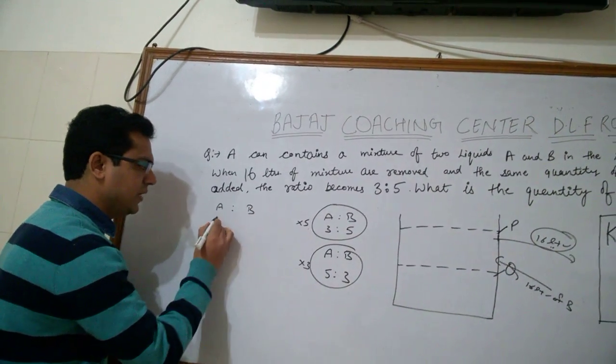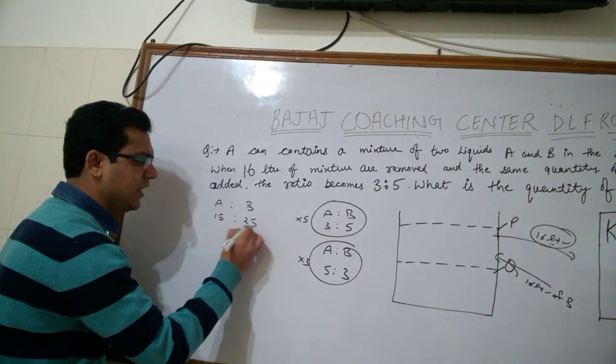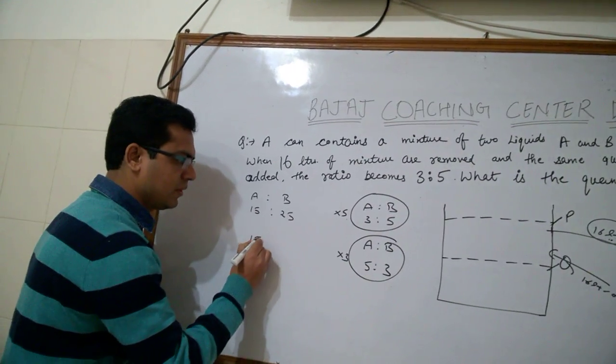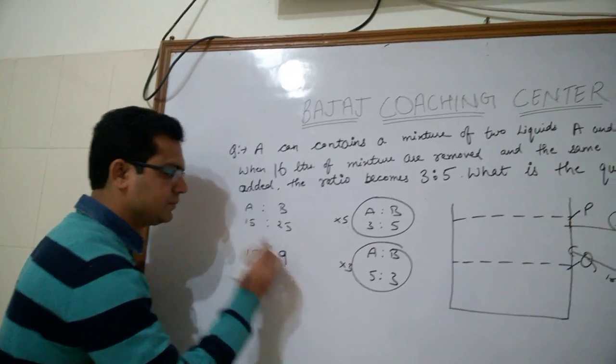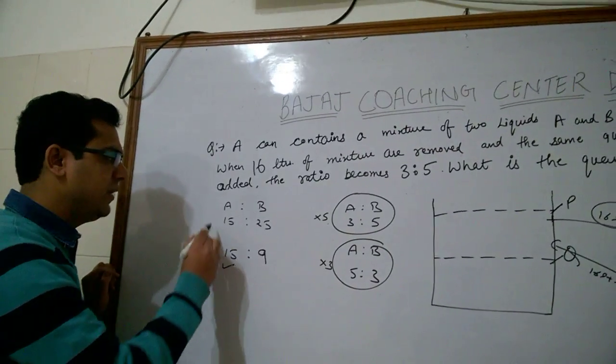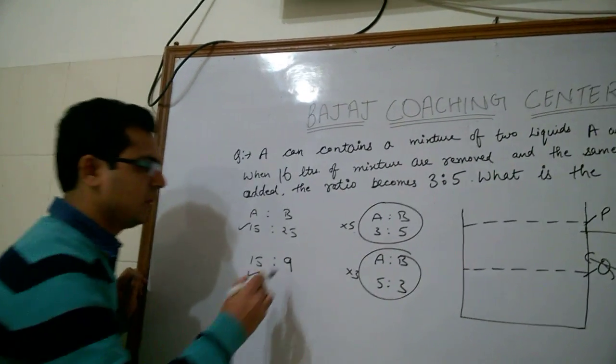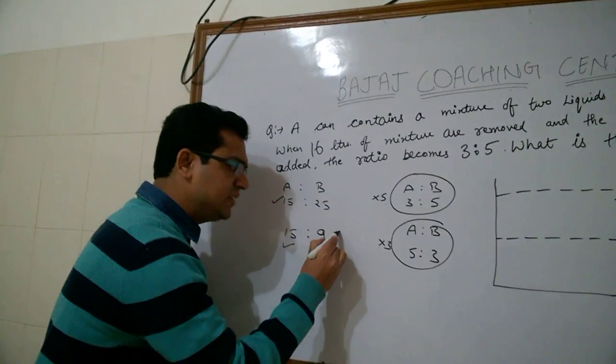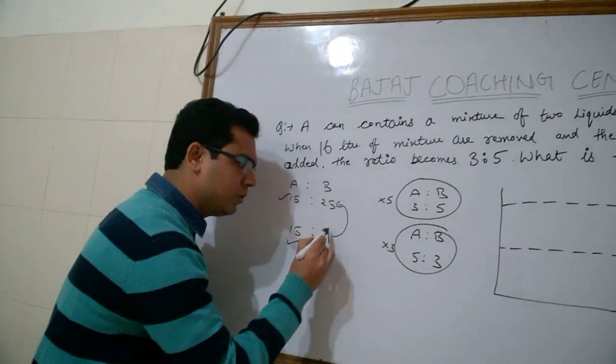Then what will happen? Think, this will become 15 is to 25. And this will become 15 is to 9. Now, we made A fixed. And B is increasing from 9 to 25.